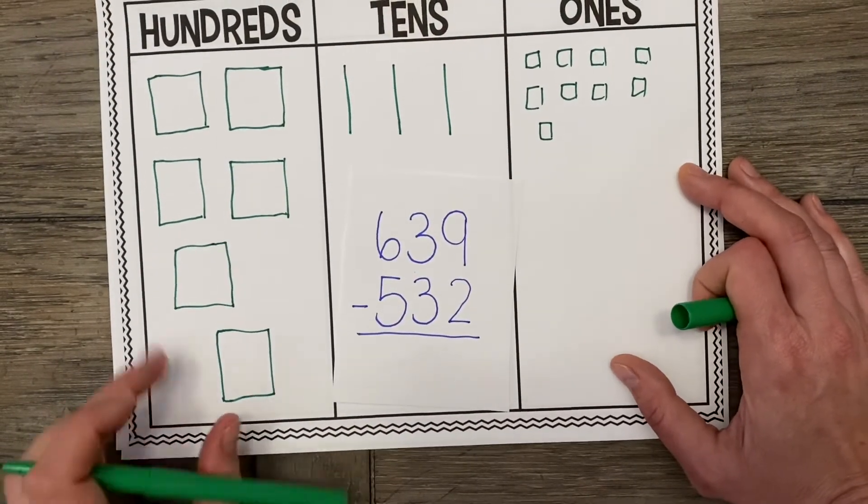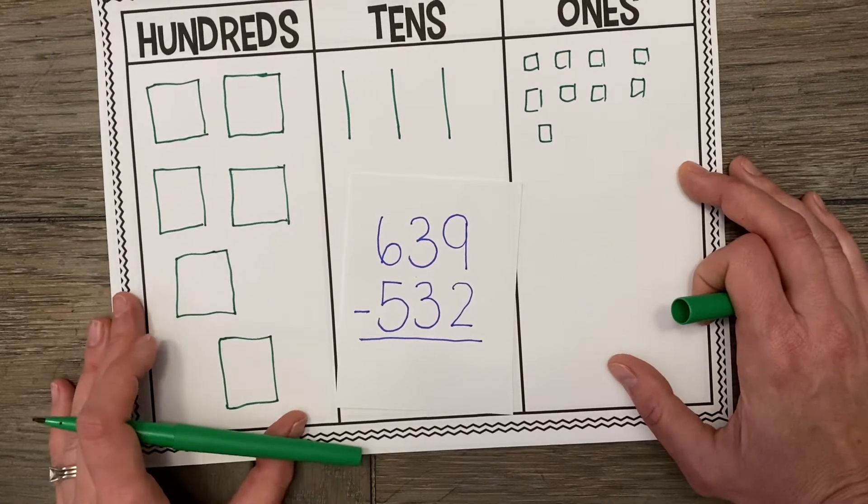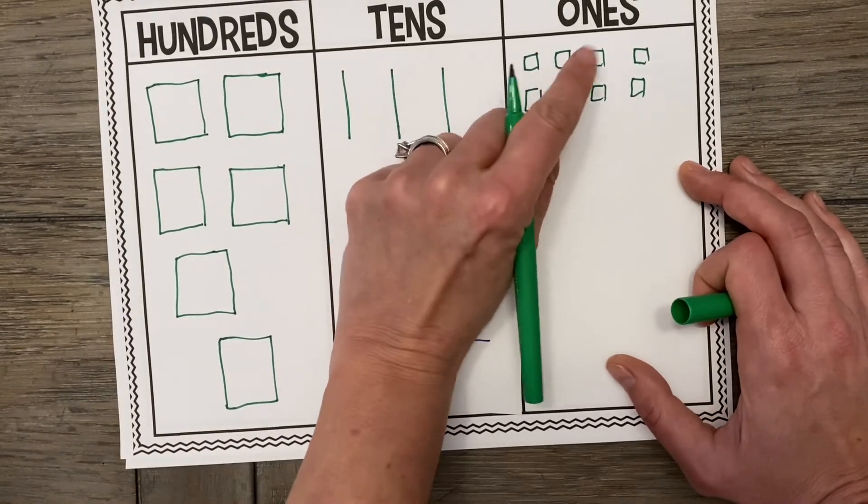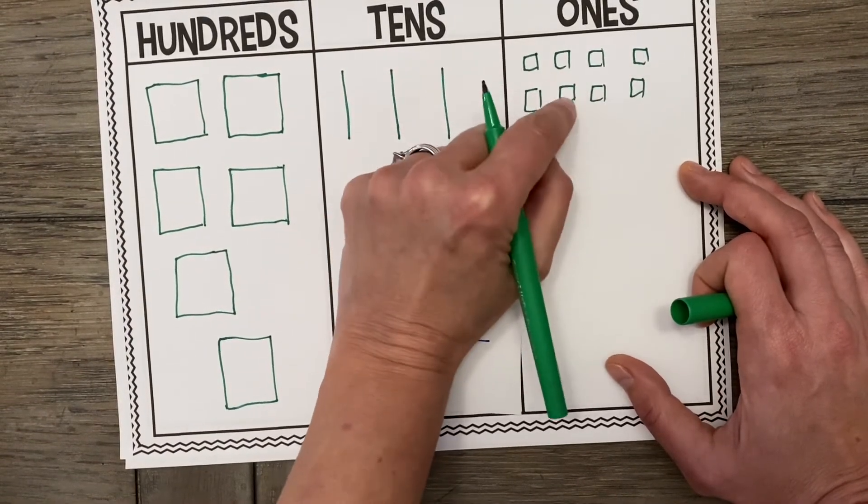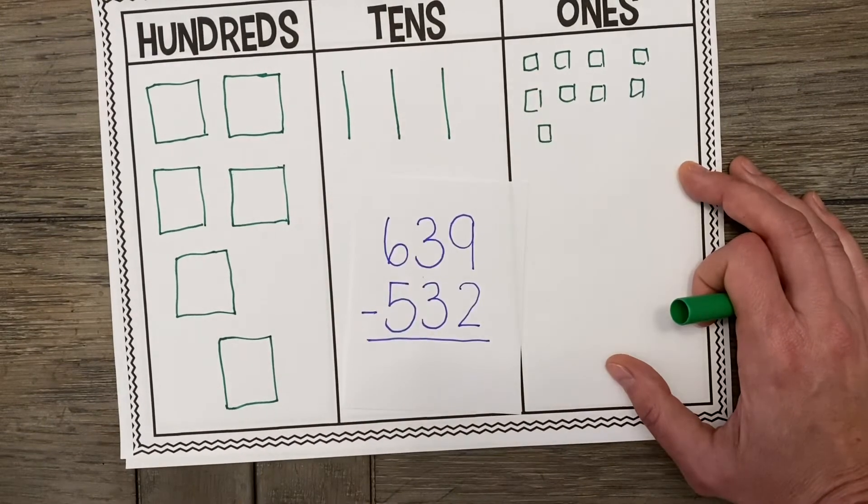There we go. I'm going to go ahead and count them up like I always like to do to make sure that I didn't lose track while I was drawing. So 1, 2, 3, 4, 5, 6, 7, 8, 9. Got it. Alright.